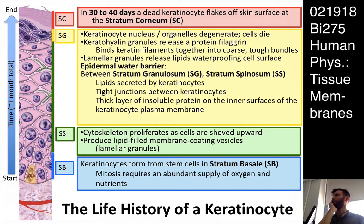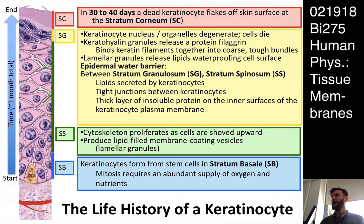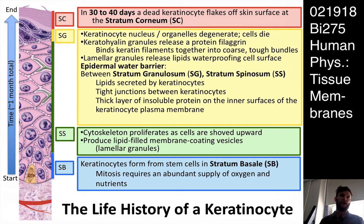The biggest point here is that it takes about a month — 30 to 40 days — for a cell to go from the stratum basale or germinativum all the way up to the point where it's become dead and desiccated and flakes off as a skin flake. A cell that was originally birthed by the mitosis, the division of a stem cell at the base of the epidermis, will live for about a month before it flakes off.